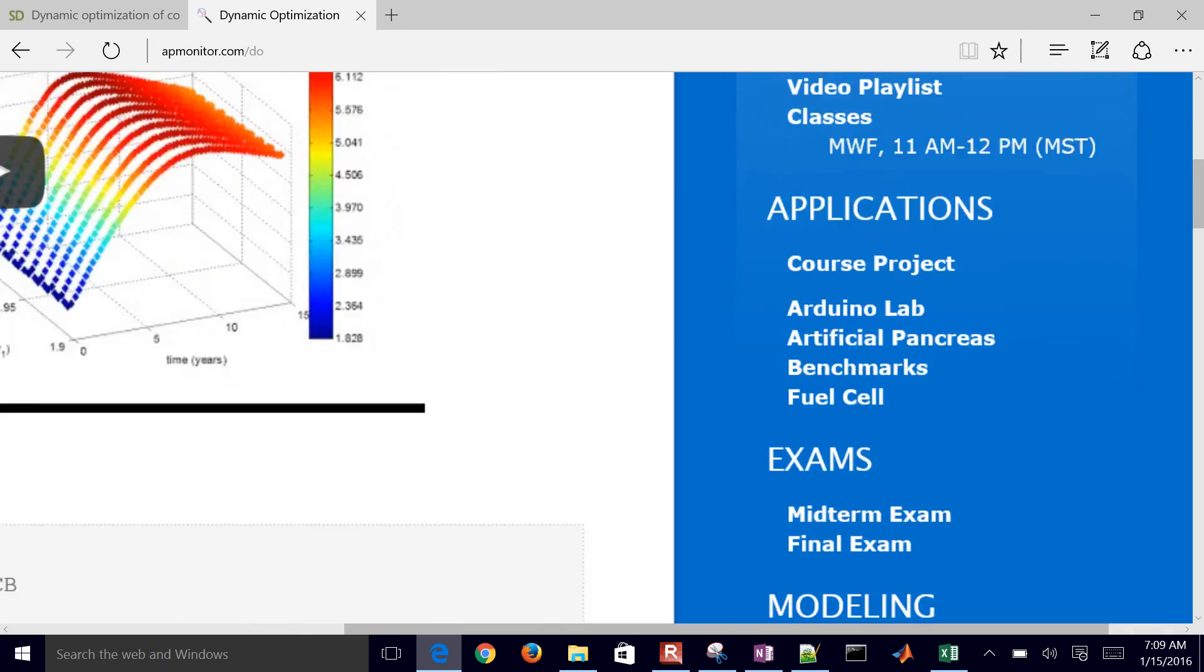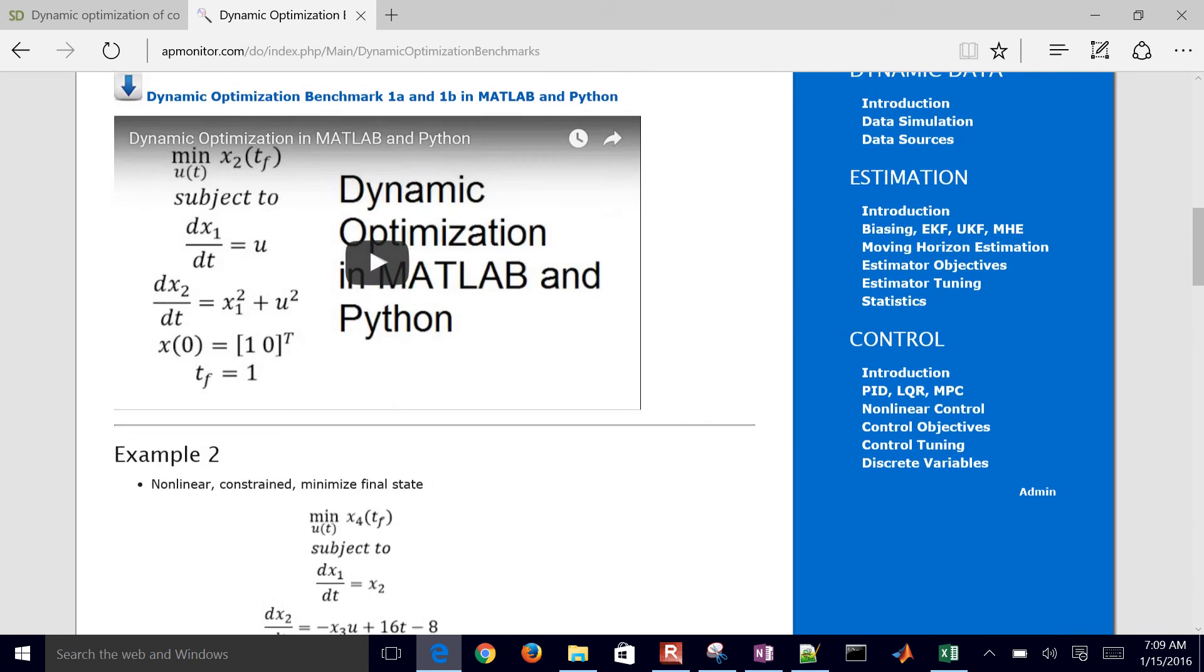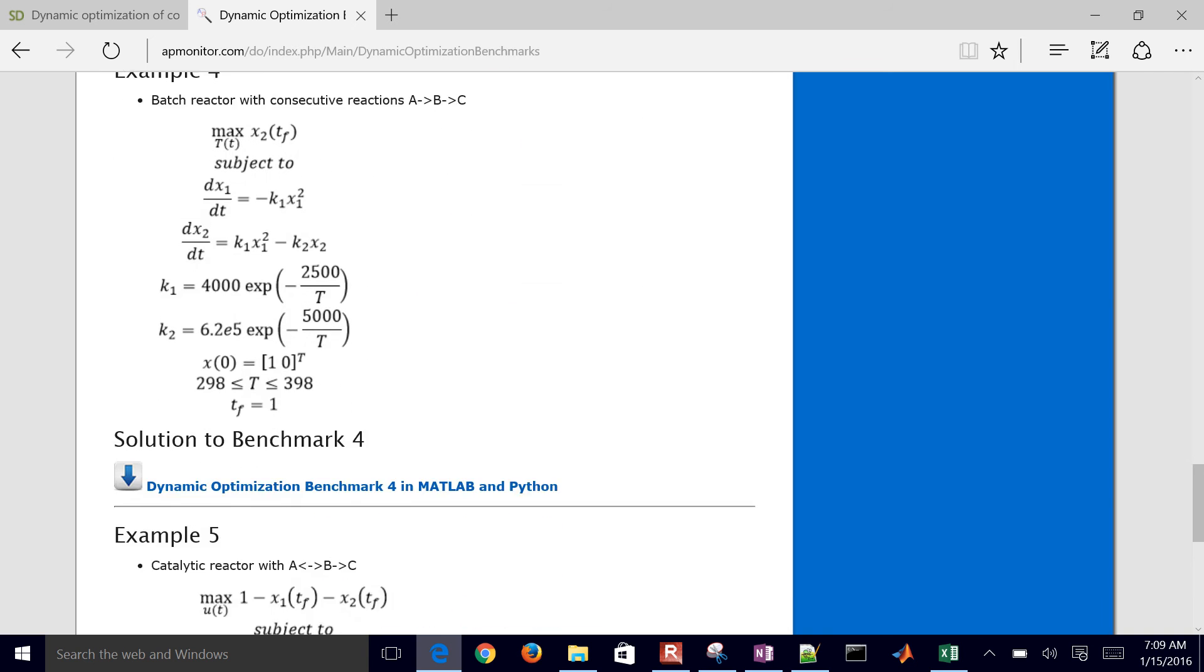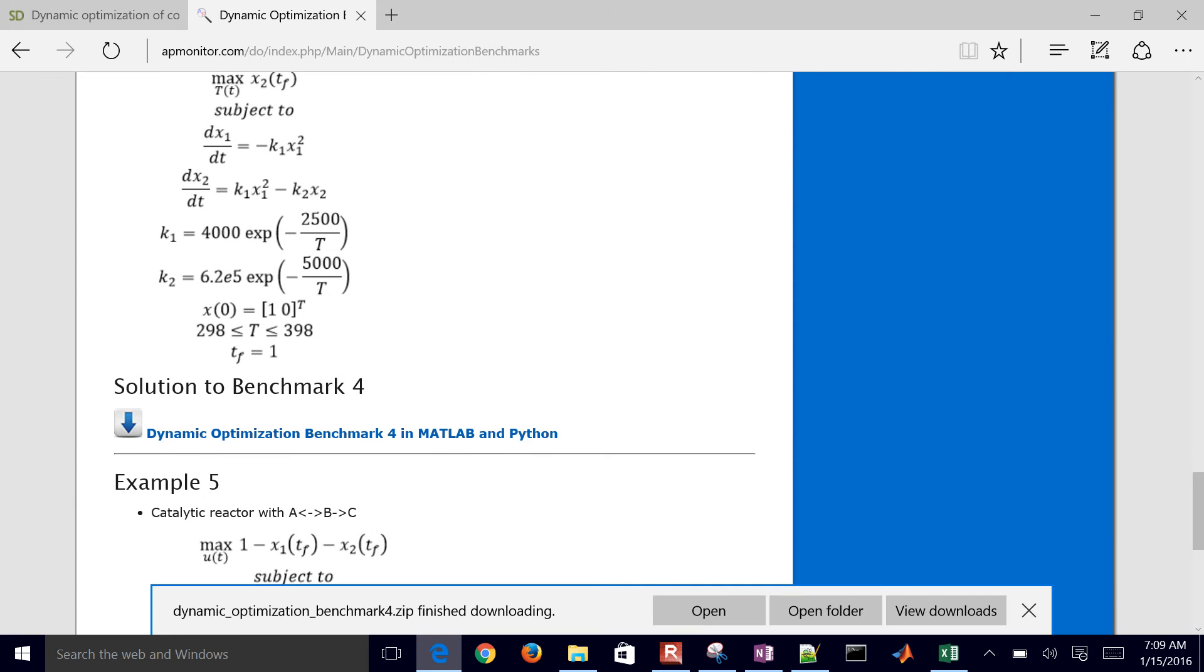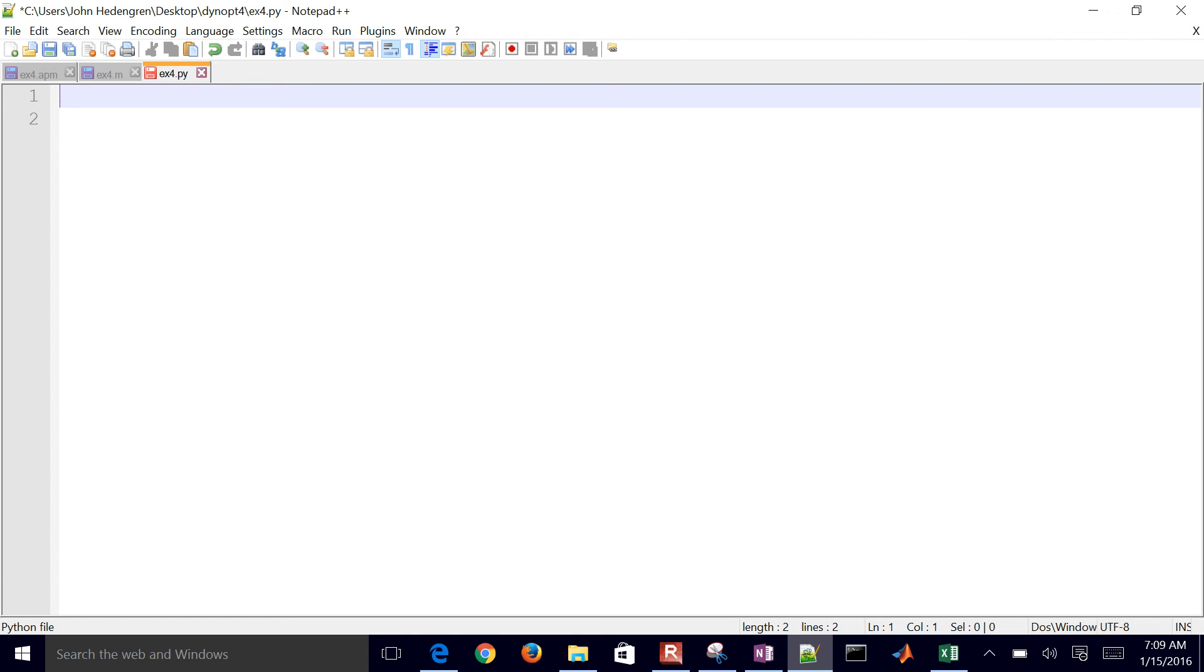We're going to be covering these problems in the Benchmarks section. This is Benchmark Problem Number 4. So you can see the source files there. If you want to download those, you're welcome to. I'm going to go ahead and just create these from blank files. So I'm going to create, first of all, an example4.apm file.